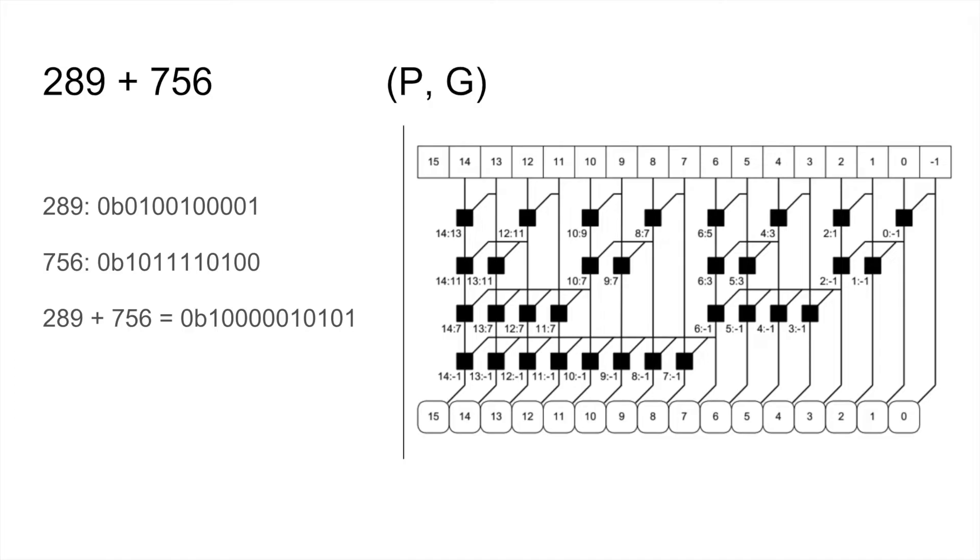We'll do an example of 289 plus 156. For the conventionalized we'll use p comma g, so propagate comma generate for my slice, but you might do it differently. So 289 you convert that into binary, 156 you convert into binary, and then you do the summation you convert into binary, which this 1 1 0 1 1 0 1 0 1 will be the answer that you should get after all the calculations.